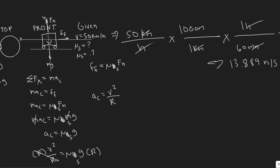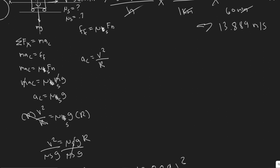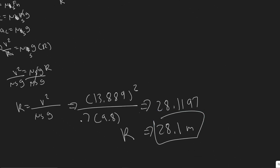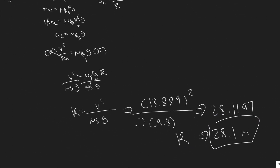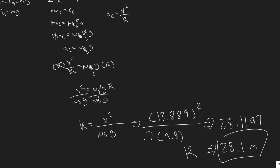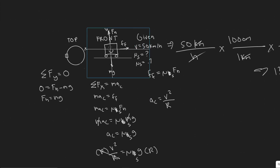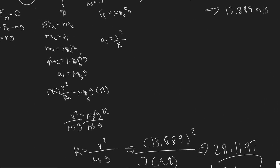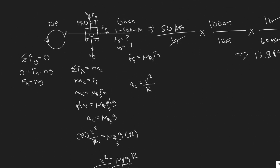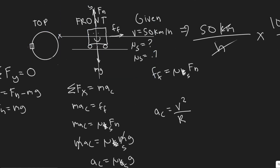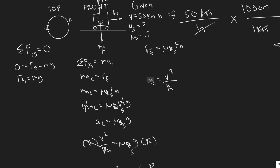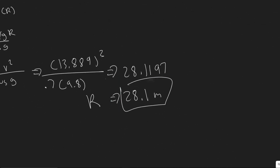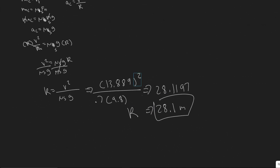For wet weather safety, a radius of 28.1 meters is what's needed. If the radius were any less, the car would slip. To summarize: sum the forces in x, recognize that the force of friction must equal the centripetal force ma_c, substitute the centripetal acceleration formula v²/r, and solve for r. The answer is 28.1 meters.